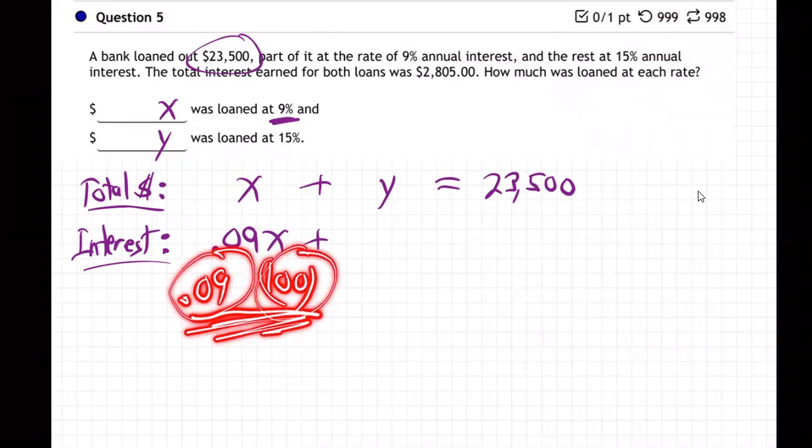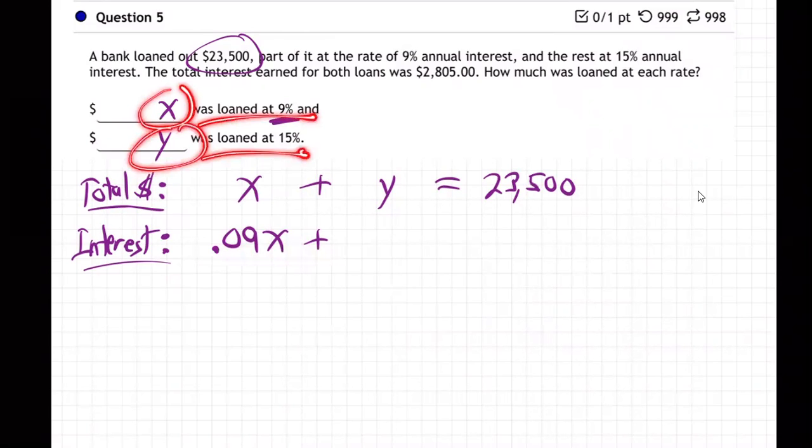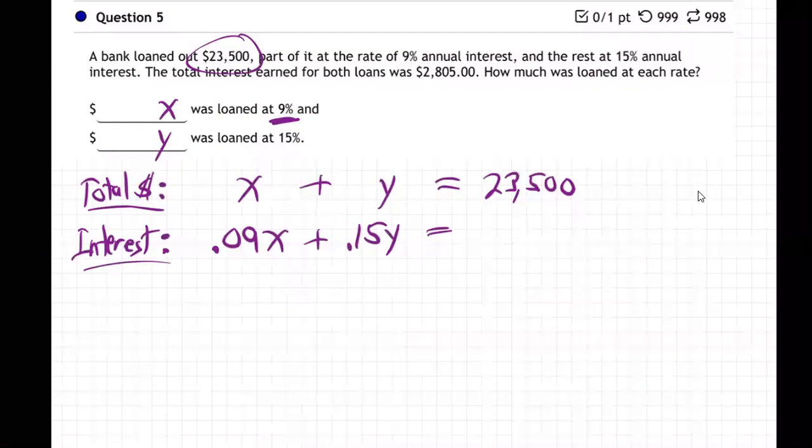Well, X is the amount loaned at 9%. Y is the amount loaned at 15%. So 0.09 times X is the amount of interest you get out of the first account. And 0.15 times Y is the amount of interest you get out of the second account. And the total interest earned for both loans is $2,805.